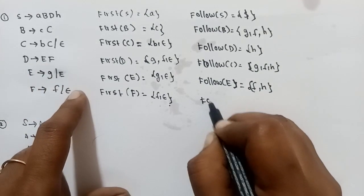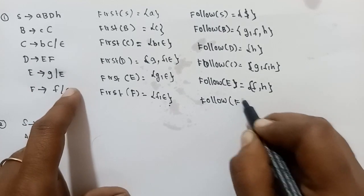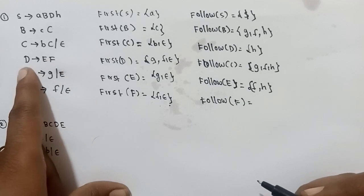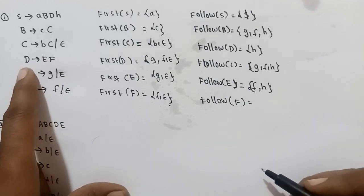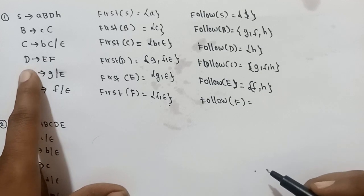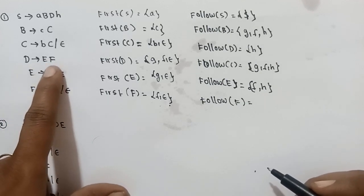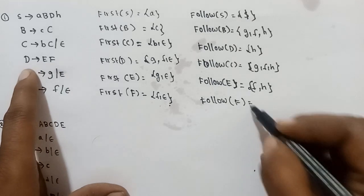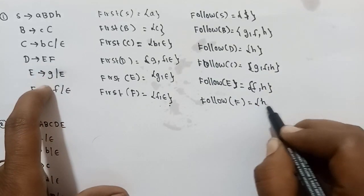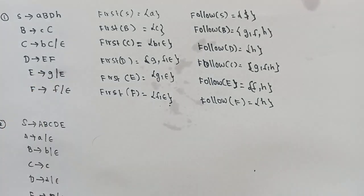Next, FOLLOW of F. FOLLOW of F is simply FOLLOW of D. So FOLLOW of D equals {H}. So all the FOLLOW sets for this example are now calculated.